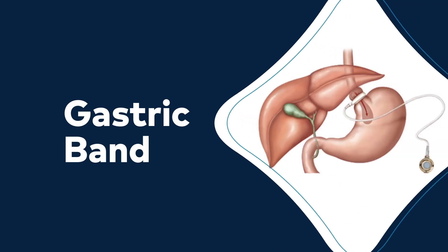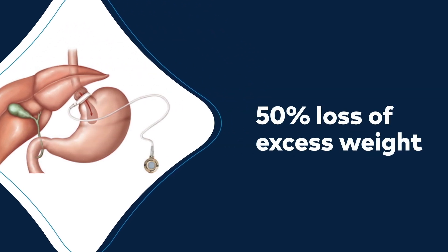Additionally, the gastric band procedure is an option. This procedure divides the stomach into two parts by placing an adjustable silicone band around the top portion of the stomach that can be filled with fluid to limit food restriction. Food sits on the top portion, taking longer to digest. Patients undergoing this procedure can expect to lose up to 50% of their excess weight.